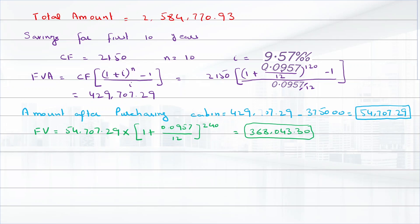So when he is ready to retire based on the current savings he will be short. He needs $25,084,770.93 but will actually have $368,043.30. So the shortfall amount required will equal $24,716,727.62.